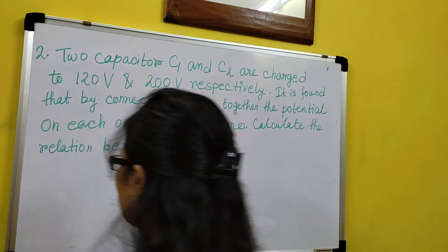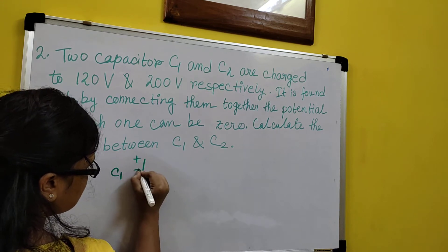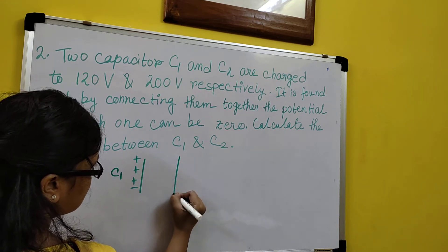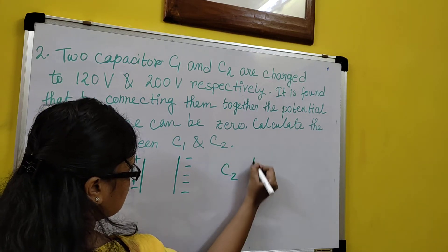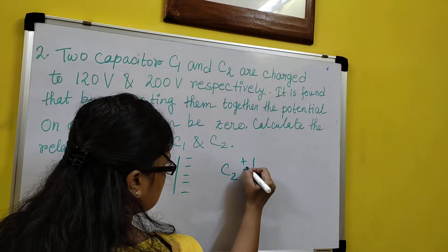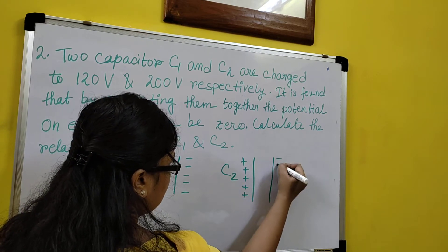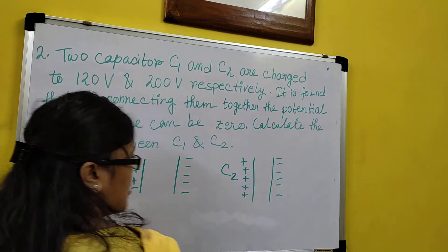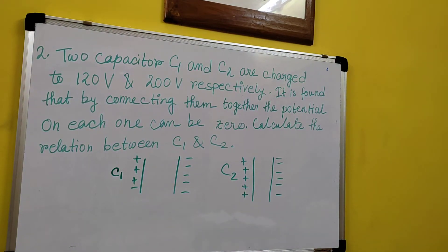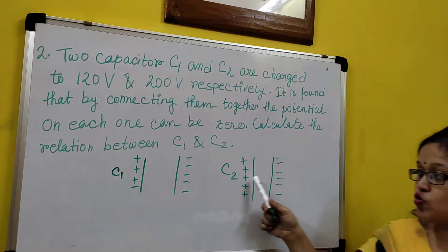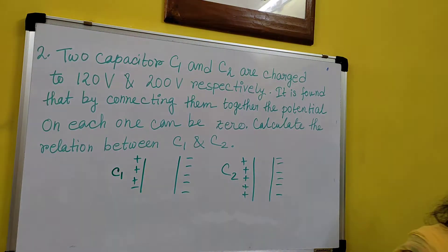Let's say C1 is positively charged on one side and negatively charged on the other side. Similarly, C2 is positively charged on one side and negatively charged on the other. To make potential 0, I connect the positive side of C1 to the negative side of C2, and the negative side of C1 to the positive side of C2.